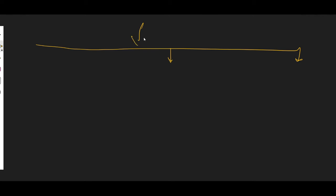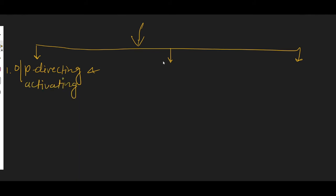Let's discuss how the already attached substituent can activate benzene for this type of reaction. Generally, we divide these groups into three categories. The first category contains ortho-para directing and activating groups. The second classification contains meta-directing and deactivating groups. The third category contains ortho-para directing but deactivating groups.